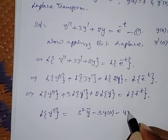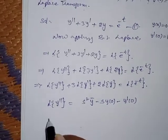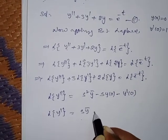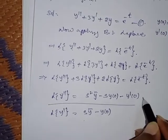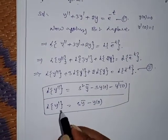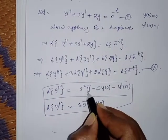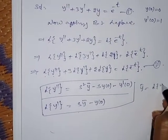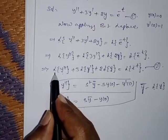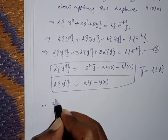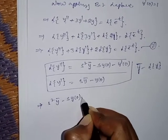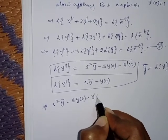The formulas to use are: L{y''} = s² ȳ - s·y(0) - y'(0), and L{y'} = s·ȳ - y(0), where ȳ means L{y}. Substituting these two formulas into equation number 2, we have L{y''} = s² ȳ - s·y(0) - y'(0).